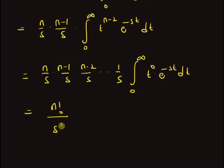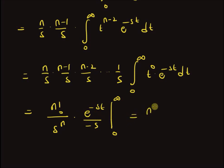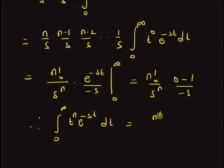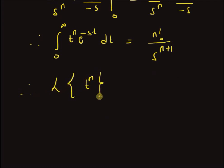That final integral equals e^(-st)/(-s) evaluated from 0 to infinity. At infinity this is 0, and at 0 it is 1, with a minus sign, giving 1/s. Therefore the integral from 0 to infinity of t^n e^(-st) dt equals n factorial / s^n × (1/s) = n factorial / s^(n+1). Thus the Laplace transform of t^n equals n factorial over s^(n+1).